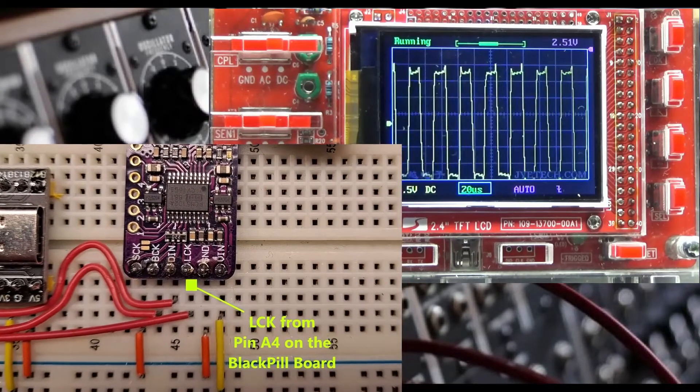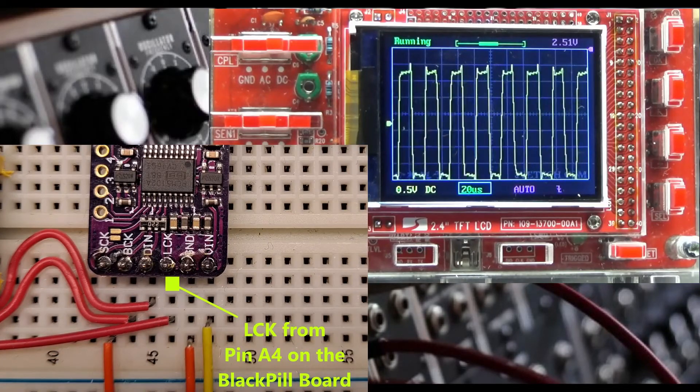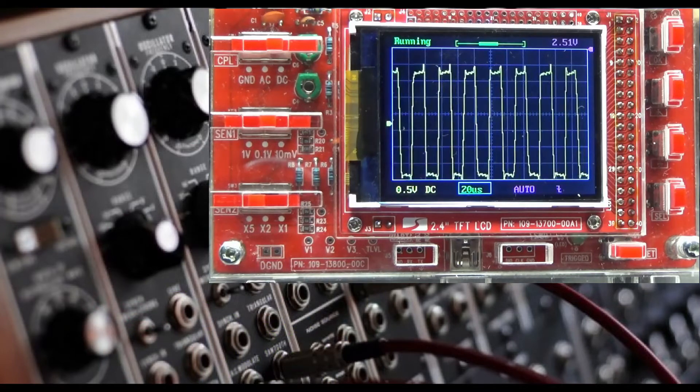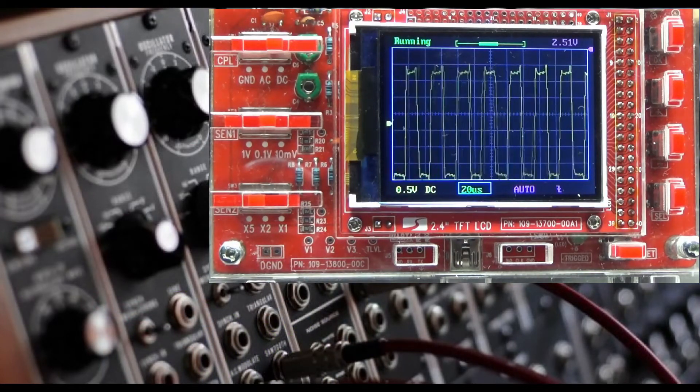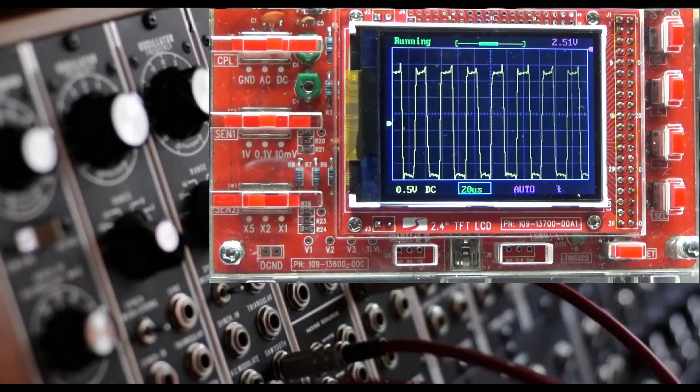Now let's move our test lead over to the digital analog converter module onto the LCK pin. And we should see the same waveform as indicated here. This confirms that we are indeed getting the signal from the A4 pin over to the LCK pin.